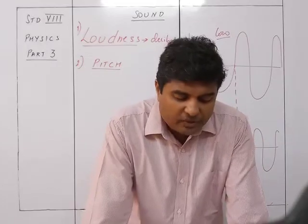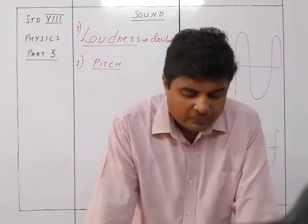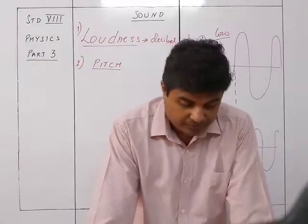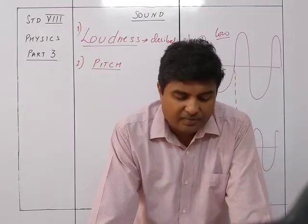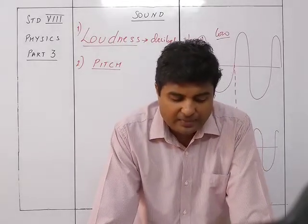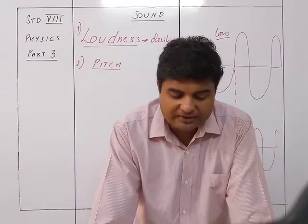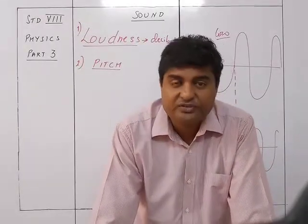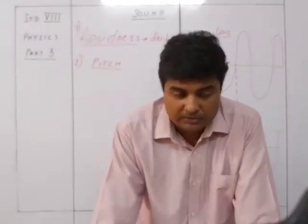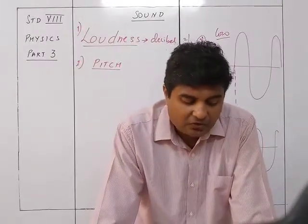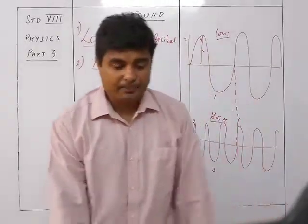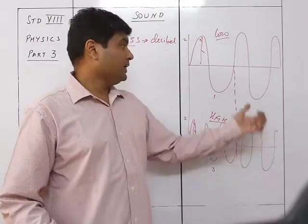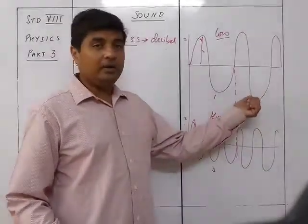Figure 7.9 shows two waves A and B, each of amplitude two centimeters. Wave A has time period T = 1 second, so frequency f = 1 Hz, while wave B has time period T = 0.5 seconds, so frequency f = 2 Hz. Thus wave A is of low pitch while wave B is of high pitch.